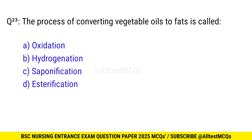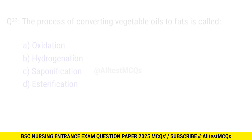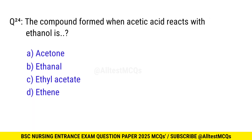Question No. 23: The process of converting vegetable oils to fats is called? The right option is B: Hydrogenation. Question No. 24: The compound formed when acetic acid reacts with ethanol is? The right option is C: Ethyl acetate.